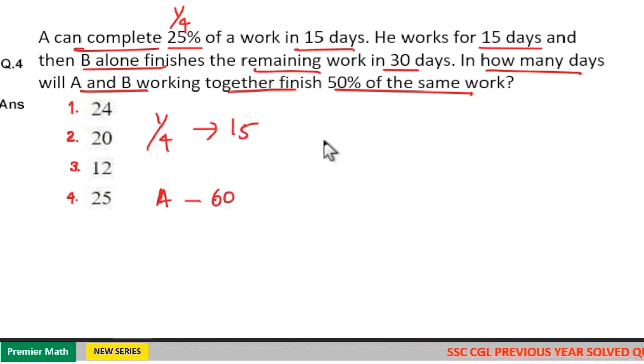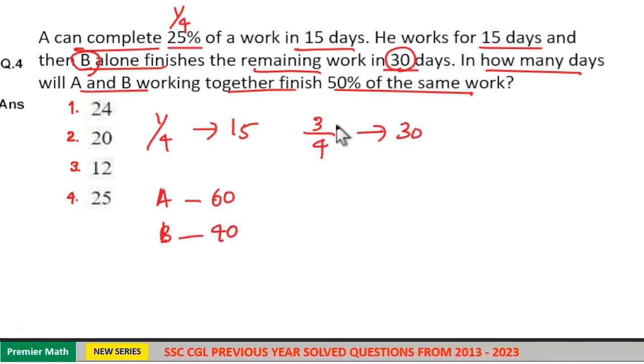Now remaining work means 1 minus 1 by 4, which is 3 by 4th of the work. 3 by 4th of the work is finished by B in 30 days, which means B can finish the work in 40 days. That is 3 goes 10 times in 30, so 1 work will finish in 40 days.